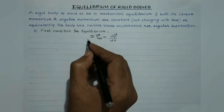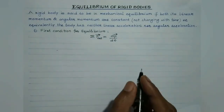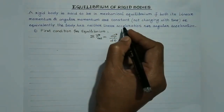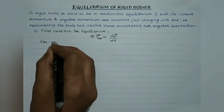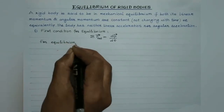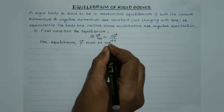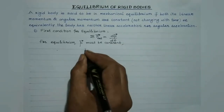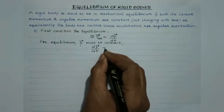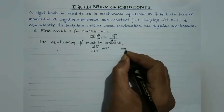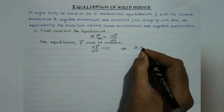The summation F external represents the vector sum of all external forces acting on the rigid body. For equilibrium, the linear momentum P must be constant. Since differentiation of a constant is zero, this implies that the net external force — the vector sum of all external forces acting on the rigid body — must also be zero.